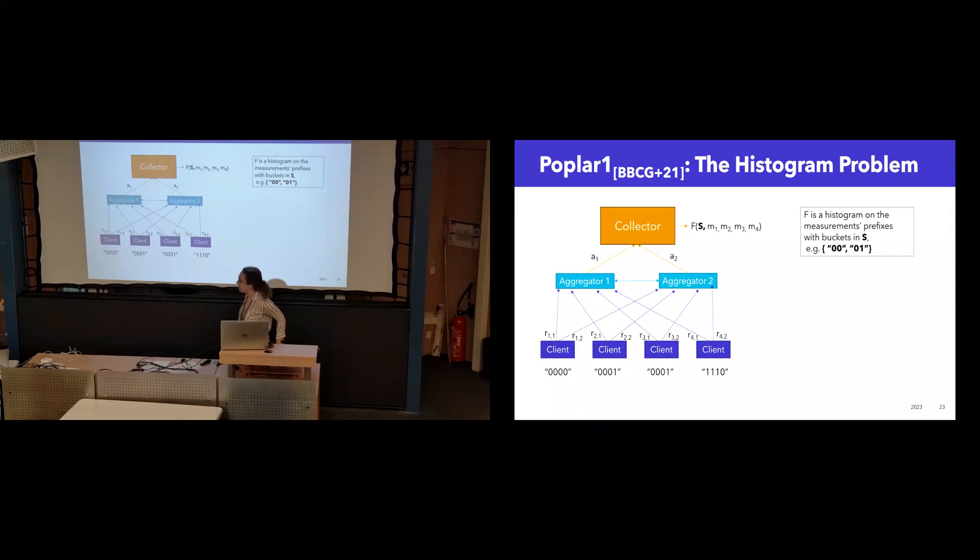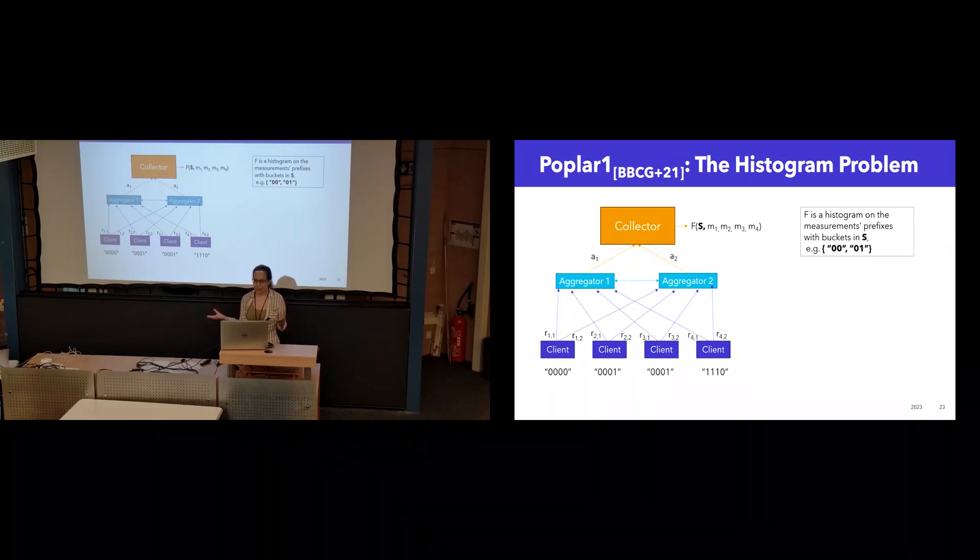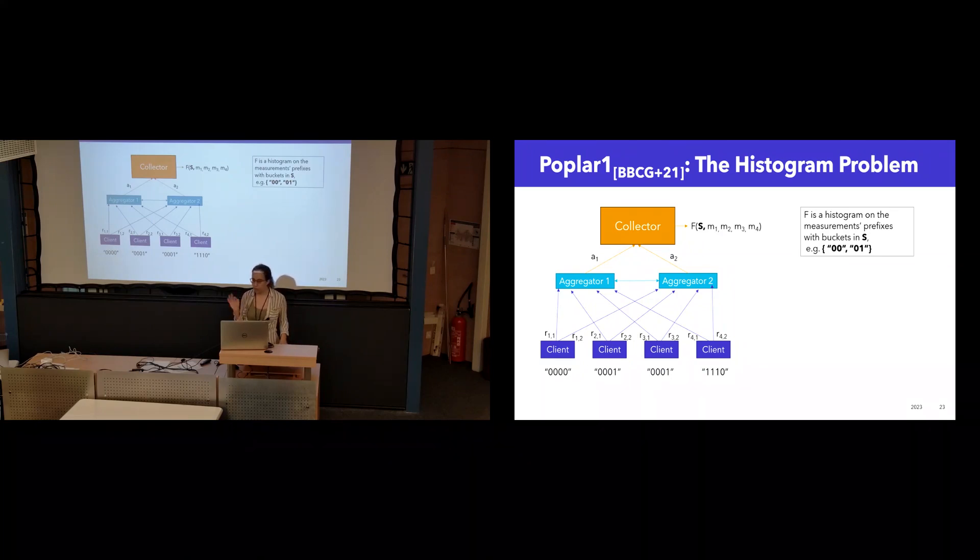So for example, if S contains the bit strings 00 and 01, we see 00 shows up as a prefix in three measurements, 01 shows up as a prefix in none. And we can ask, why do we need another histogram protocol? I mentioned on a prior slide, PRIO3 also does histograms. But there's some distinct differences.